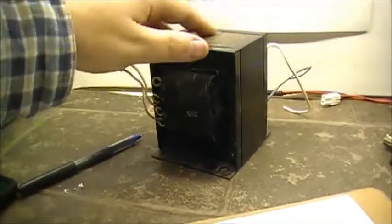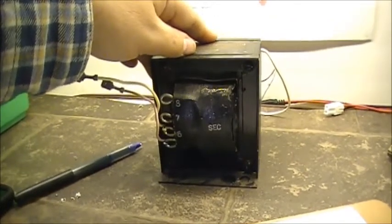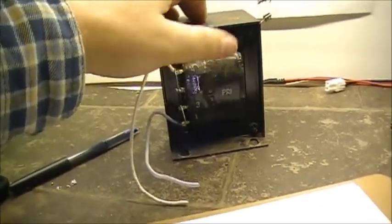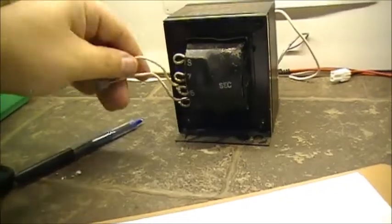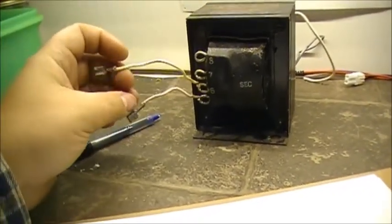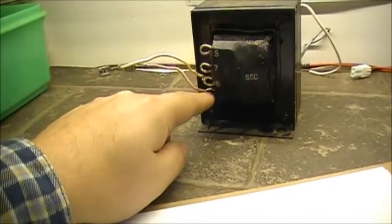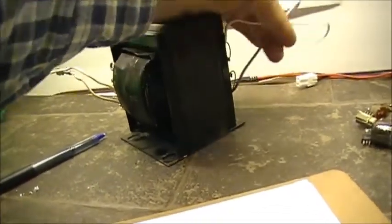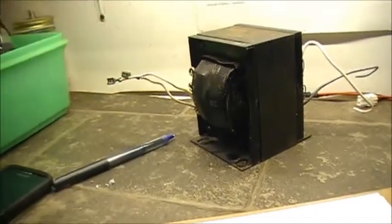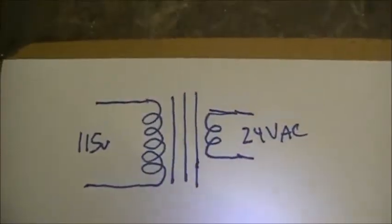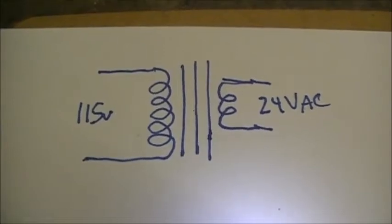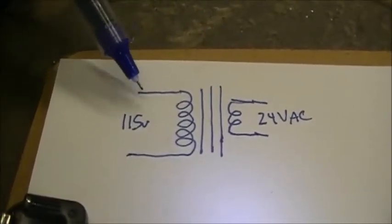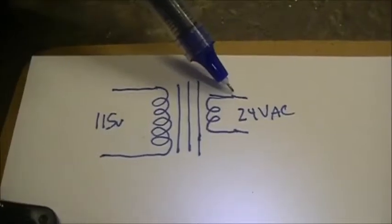Now we'll go through the schematic diagrams. You have your primary — you apply 115 volts to the primary side — and then the secondary is the other side with the output windings. This transformer has four different taps so you can get four different voltages. The schematic diagram for a transformer shows 115 volts on the primary side and 24 volts on the secondary.